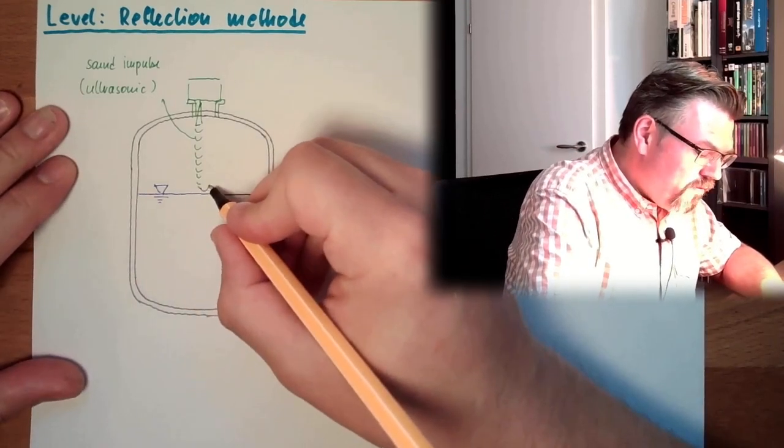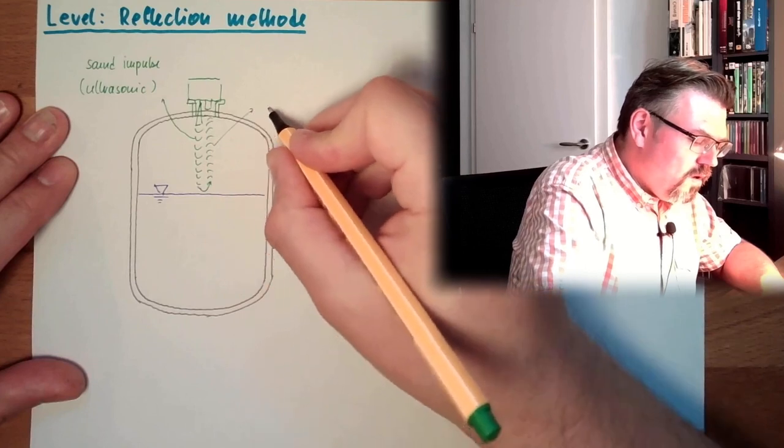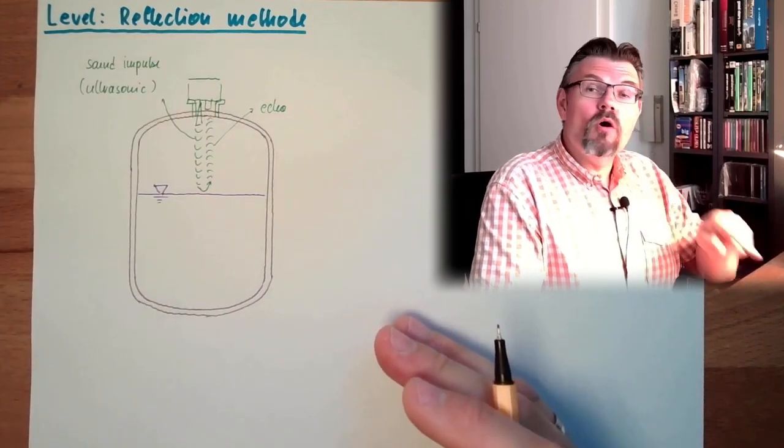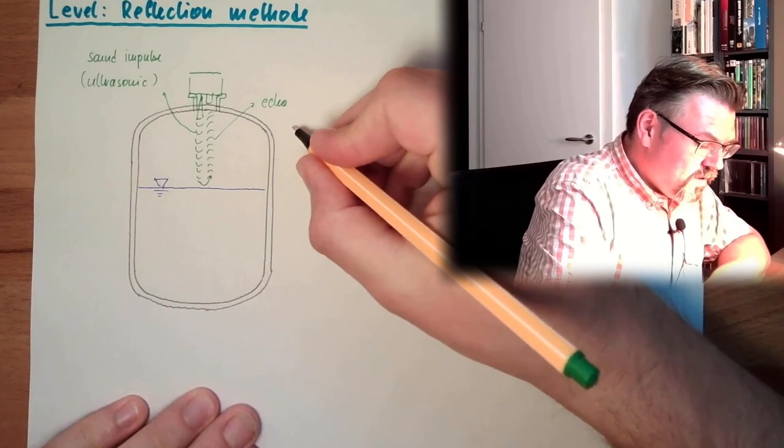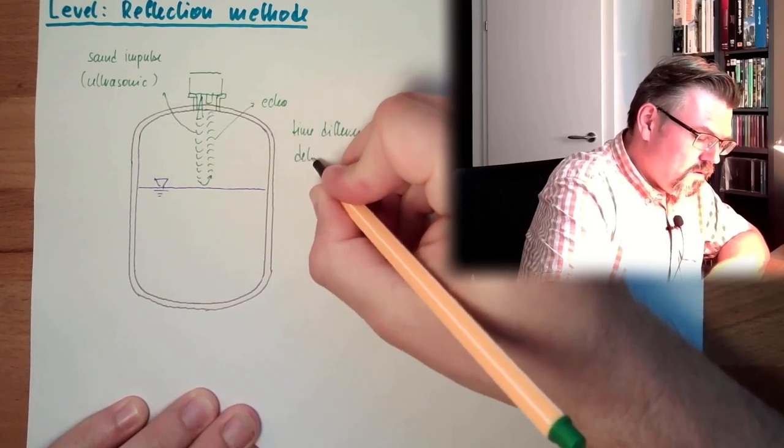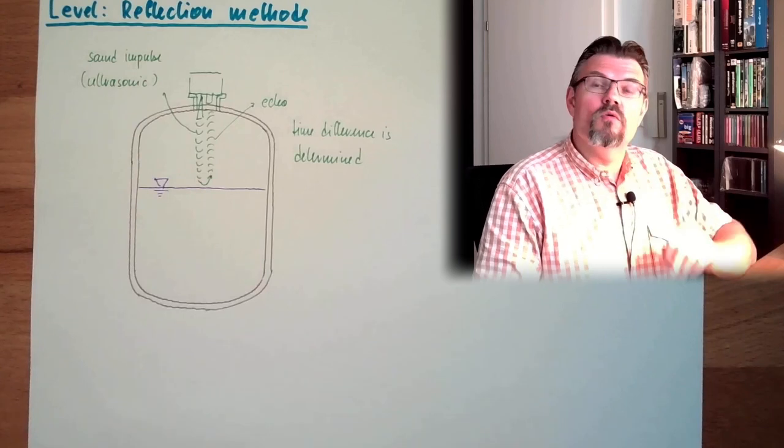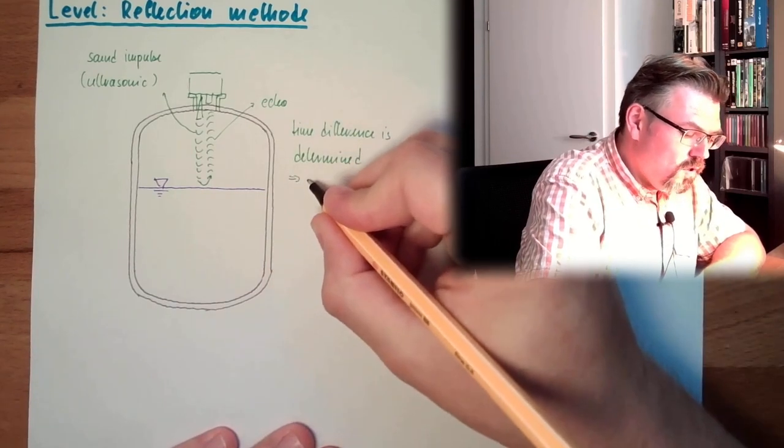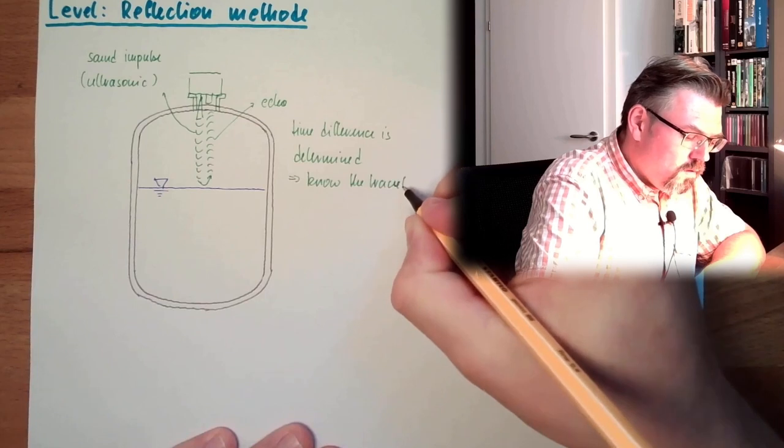And here at the surface we have a reflection and we are producing an echo. So there is an impulse. We are listening to the echo. Since we know when we send the impulse and when we receive the echo, we're measuring the time. So the time difference is determined. So from the time difference between impulse and echo, we know how long the sound took to travel. And from the speed of sound we know the traveling distance.